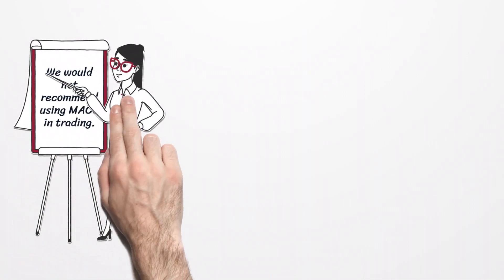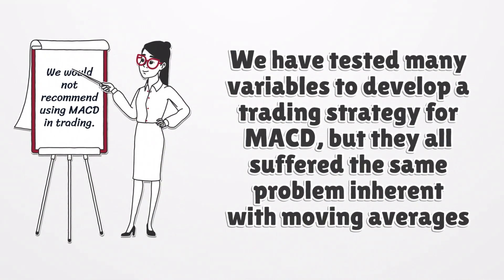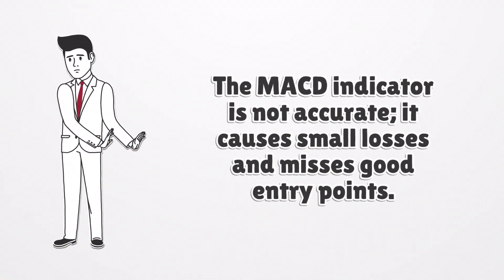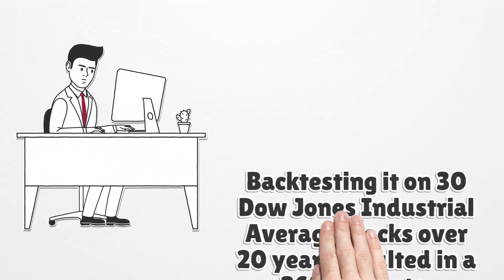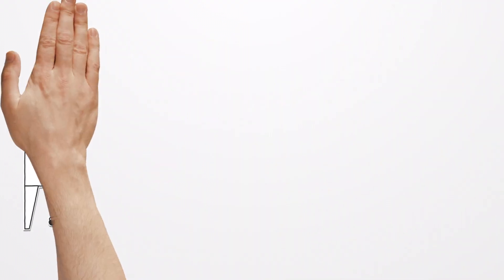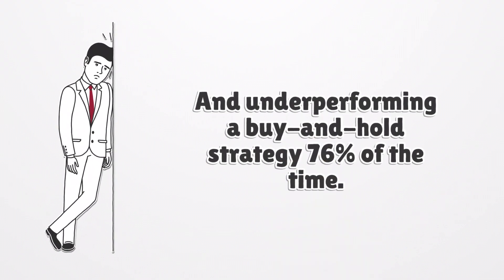If you want to use the MACD in trading, just know we tested many variables to develop a trading strategy for MACD, but they all suffer the same problem inherent with moving averages. The moving average convergence divergence indicator is not accurate. The MACD causes small losses and misses good entry points. Backtesting it on 30 Dow Jones Industrial Average stocks for over 20 years showed results of a 26% win rate and underperforming a buy and hold strategy 76% of the time.